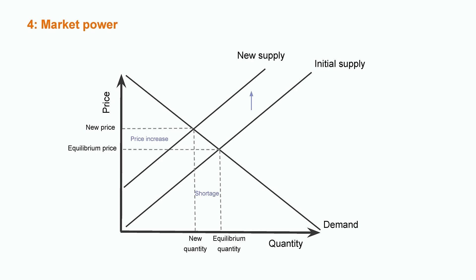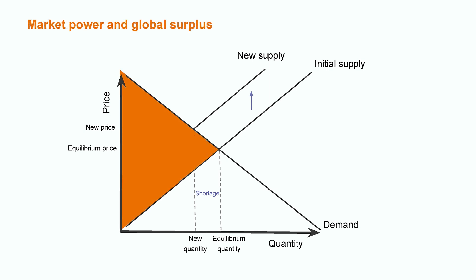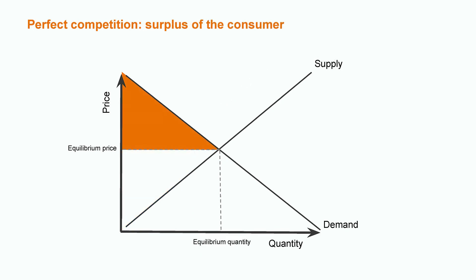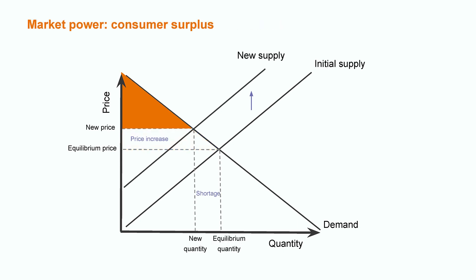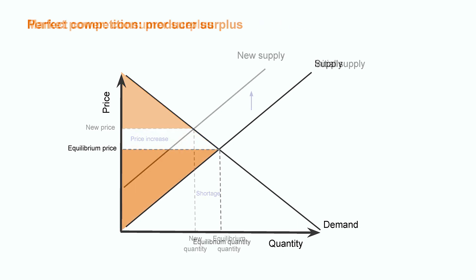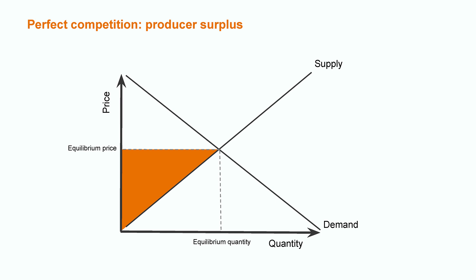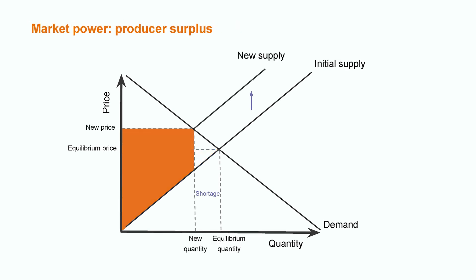This will induce shortages in quantity and an increase in prices. The global surplus has diminished. The consumer surplus has now decreased in size. The new producer surplus corresponds to the area between the price and the new supply curve. The area lost for both the producer and the consumer is a deadweight loss — a loss in global surplus.